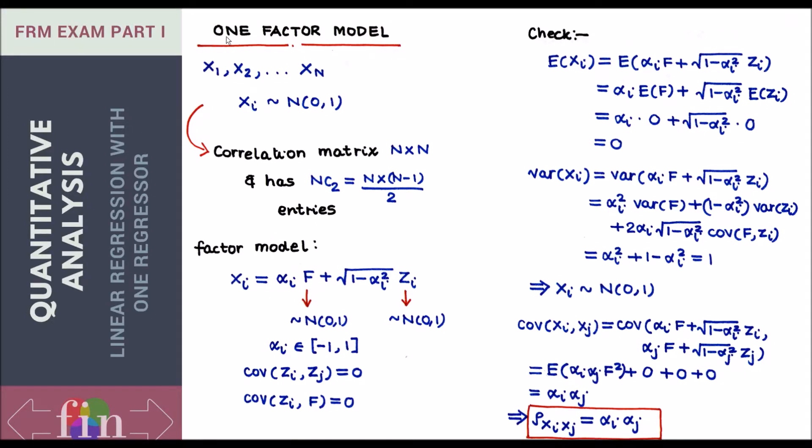In this topic let us learn the one factor model. To understand this model, I'll play around with n random variables which I denote by x1, x2, all the way till xn. Let's assume that all of these random variables follow the same distribution, the standard normal distribution. So each of these xi's is normally distributed with zero mean and one standard deviation.